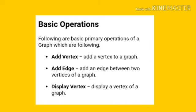Basic operations. Following are the basic primary operations of a graph, which are: first is add vertex, add a vertex to a graph. Add edge, add an edge between two vertices of a graph. Display vertex, display a vertex of a graph.